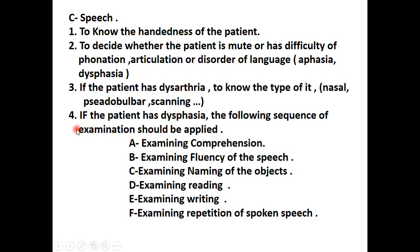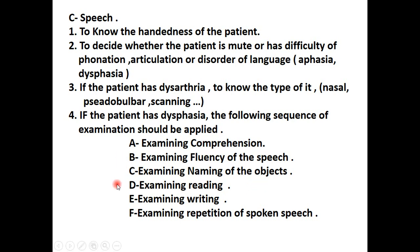Then number four, in examining the speech, if the patient has dysphasia, the following sequence of examination should be applied: start with examination of comprehension, then examine for fluency, then examine for naming of subjects or objects. If there is difficulty in naming objects, you then examine for reading, writing, repetition of spoken speech, and dictation. These are the steps in the examination of speech, which is part of the general neurological examination.